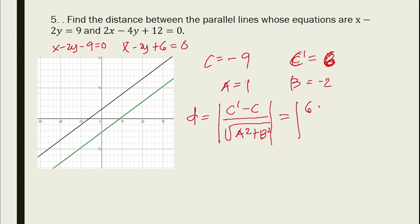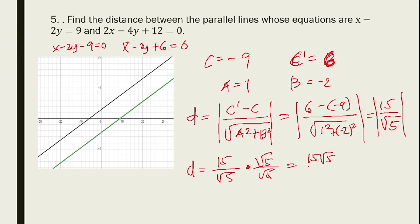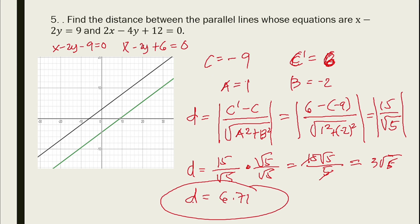Using the formula: d = |c' - c| / √(a² + b²) = |6 - (-9)| / √(1² + (-2)²) = 15 / √(1 + 4) = 15 / √5. Rationalizing: 15√5 / 5 = 3√5 ≈ 6.71. This is the distance between the two parallel lines.